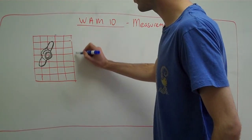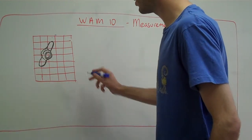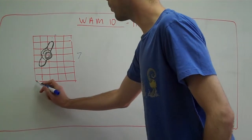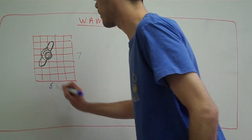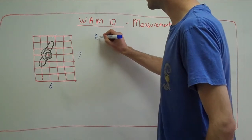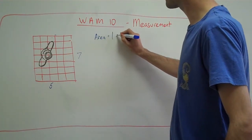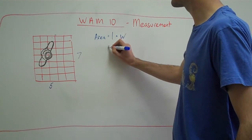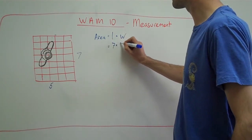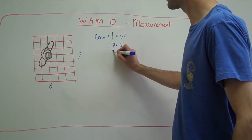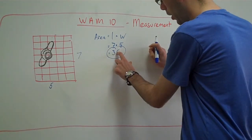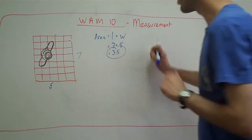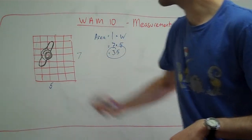We have one, two, three, four, five, six, seven, by one, two, three, four, five squares. In order to find the area, we do length times width. So, we have 35 as our total area for our landing pad.